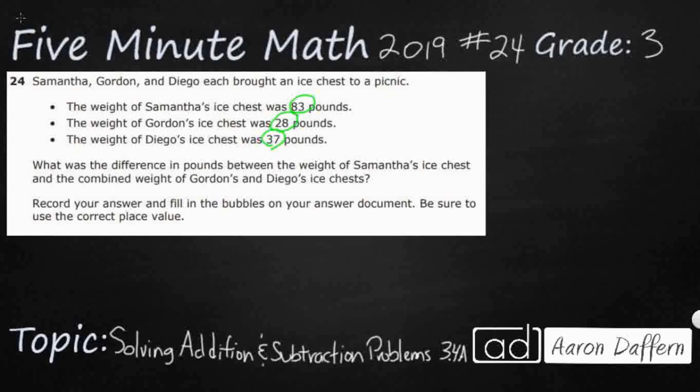You'll notice there are no answer choices at the bottom — no A, B, C, D, F, G, H, or J. This is what we call a griddable response; we're supposed to fill in our bubbles on the answer document. So we are on our own to figure out the answer, and then I'll show you how to bubble it in as if this were a test.